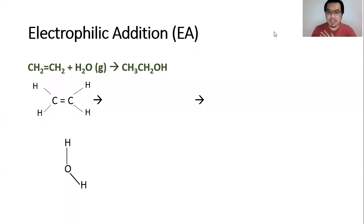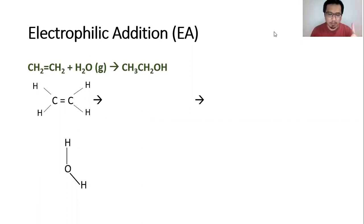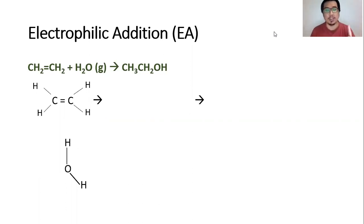Hi everyone, welcome to my chemistry video. Today we're going to be speaking about electrophilic addition reactions of alkenes. Alkenes can react with quite a number of reagents — today we're specifically looking at the reaction with steam as well as with bromine.